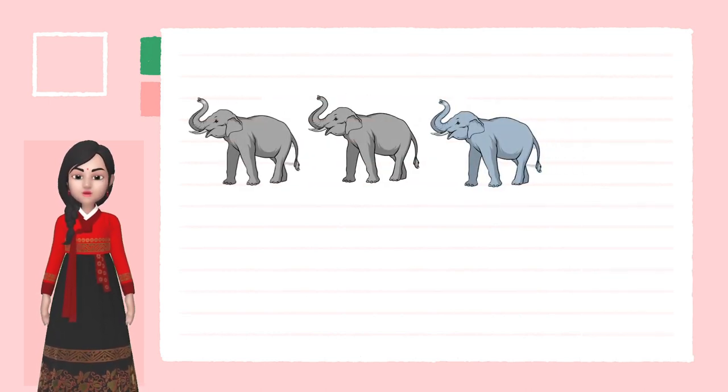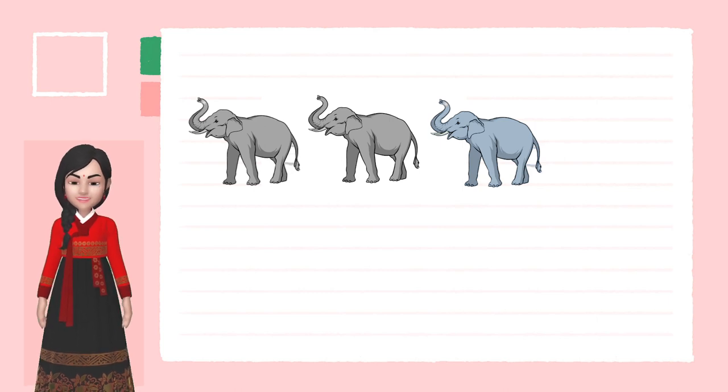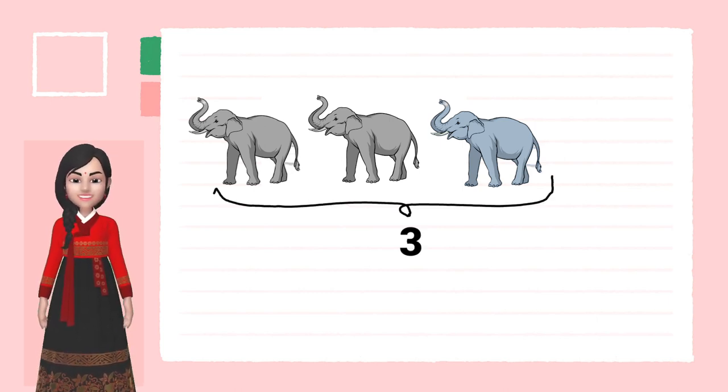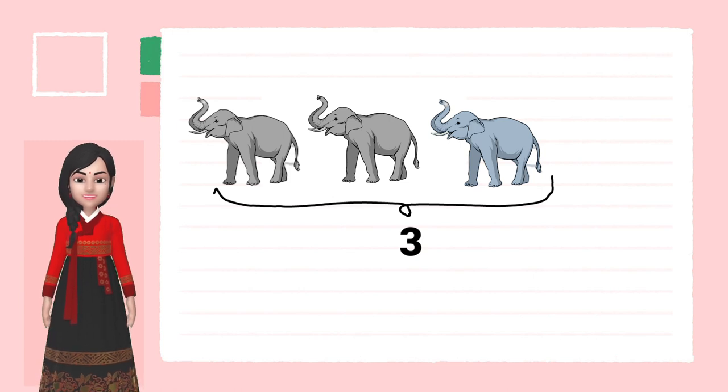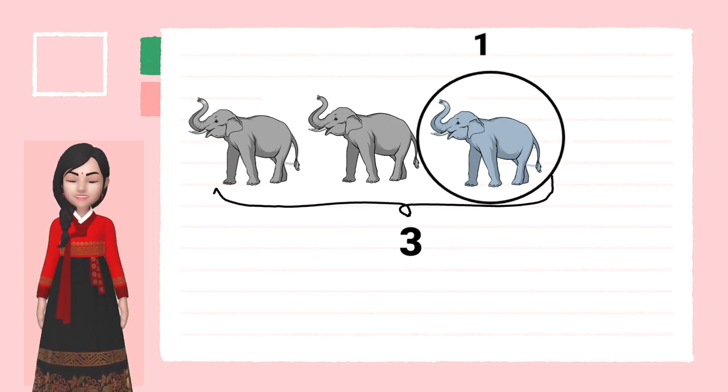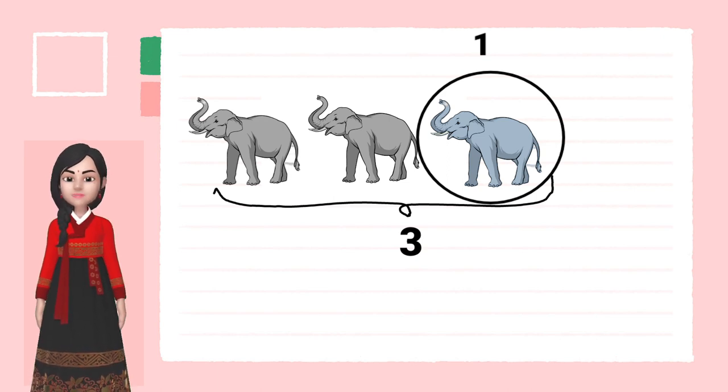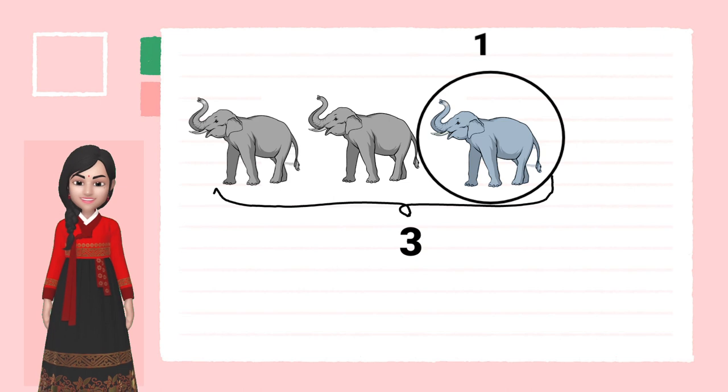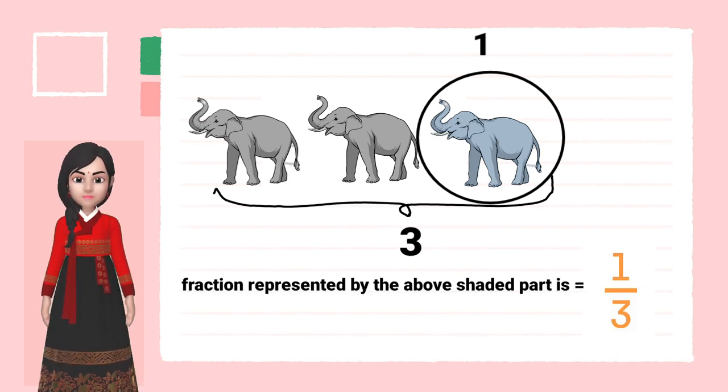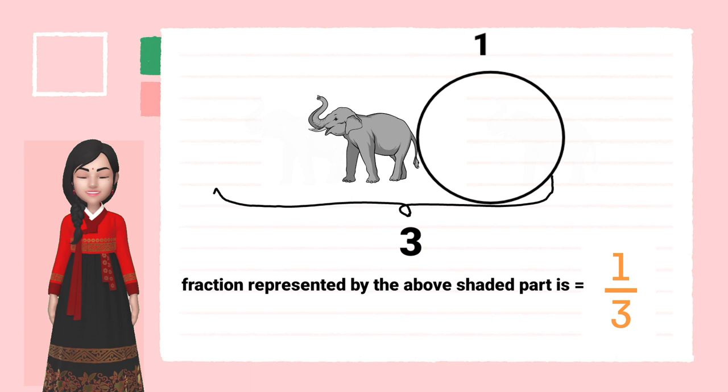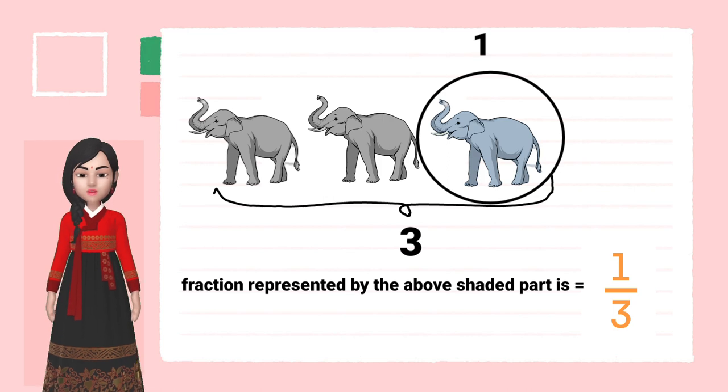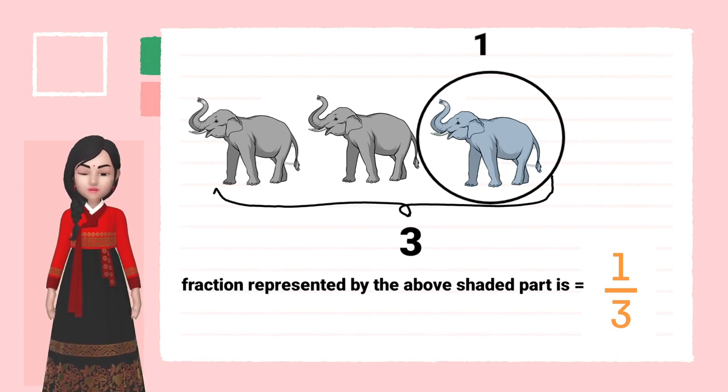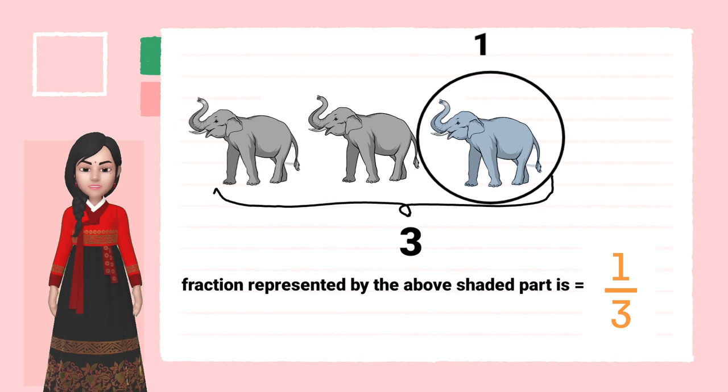How many elephants do you see on the screen? There are three elephants. How many colored elephants are there on the screen? Only one elephant. Can you represent this in the form of a fraction? Very good. One by three. Three elephants are there and out of them only one is colored. So, the fraction is one by three.